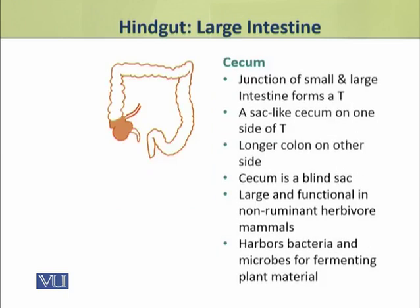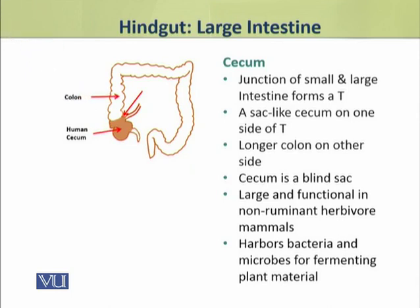The junction of the small and large intestine forms a T-shape. At this junction, on one side of the T is a sac-like cecum, and on the other side there is a longer colon.